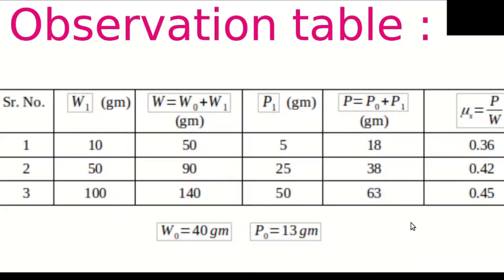Now, to get the coefficient of static friction, we have to take the ratio of P, that is the fifth column, to the weight of the wooden block, that is the third column. So, 18 divided by 50, we will get 0.36. Similarly, 38 divided by 90 is 0.42, and 63 divided by 140 gives us 0.45.